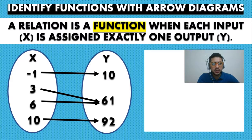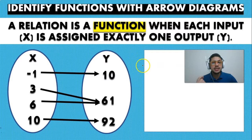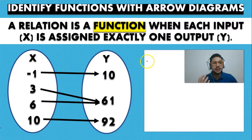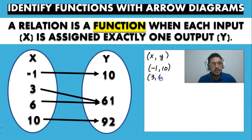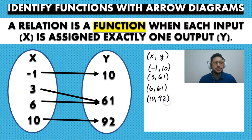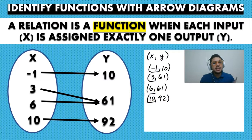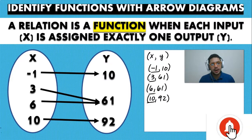Something that can really help you see if this is actually a function is to write down all the points of that set of data as (X, Y) pairs. So we write: (−1, 10), (3, 61), (6, 61), and (10, 92). As you can see, there is no repeated value for X, and each value of X has exactly one output Y.